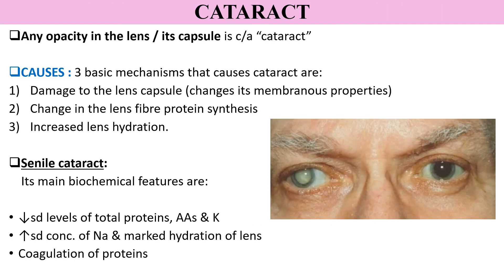Now let us see the applied aspect. Whenever any opacity occurs in the lens or its capsule, the condition is called cataract. There can be three major mechanisms that lead to development of cataract: first, damage to the lens capsule due to changes in its membranous properties, which can be due to increasing age or trauma to the lens; second, changes in lens fiber protein synthesis; and third, increased lens hydration. Cataracts are seen more commonly in old age, and this condition is called senile cataract.